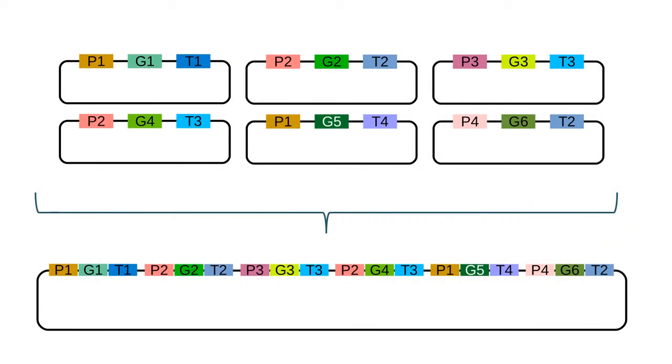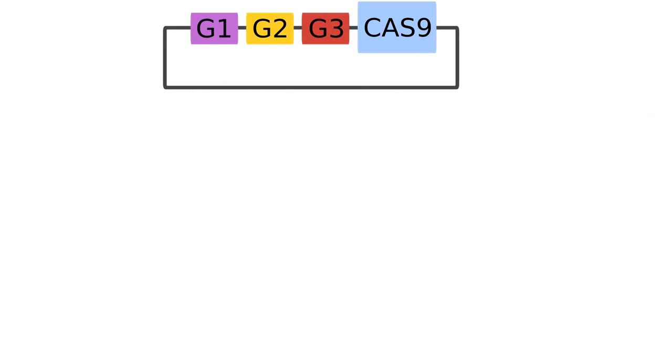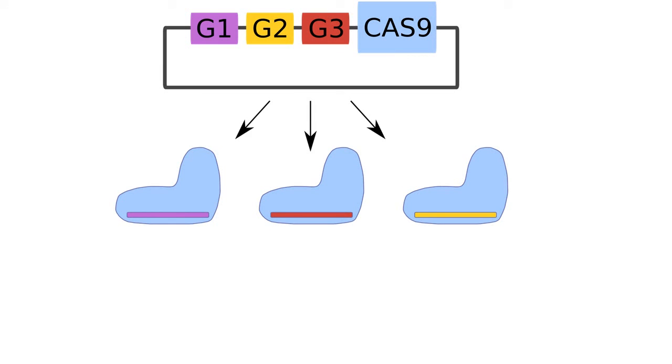Multiple genes can be stacked in one transformation event using large binary vectors, but also sequentially with trait landing pads. Recently, several genes can be mutated at once using CRISPR-Cas multiplex genome editing.